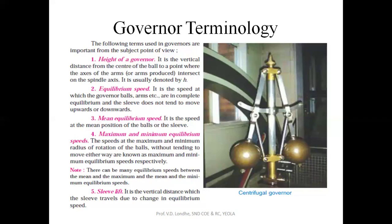Next is the Mean Equilibrium Speed. It is similar to the Equilibrium Speed — it is the speed at the mean position of the ball or the sleeve. If there is some higher or lower limit for the sleeve or ball movement, and the sleeve is at the middle position, then the governor is said to have Mean Equilibrium Speed. The Maximum and Minimum Equilibrium Speed is the speed at which the maximum and minimum radius of rotation of the ball takes place without tending to move either way. There can be an equilibrium speed between the mean and maximum position.